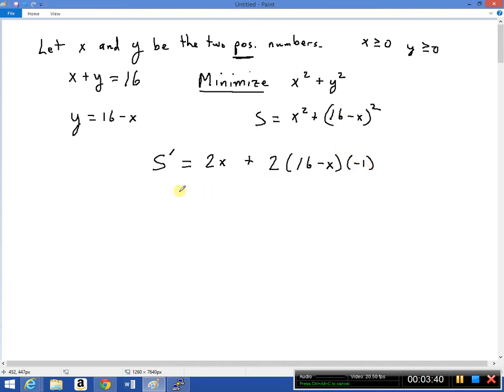So let's rewrite that to simplify it. 2x plus 32 minus 2x times negative 1. Went a little too fast there. So this is going to be 2x minus 32 plus 2x. So that's 4x minus 32. So this is the derivative. And if we think about setting that equal to 0 to figure out what the critical numbers are, then obviously x equals 8 is going to be our critical number.